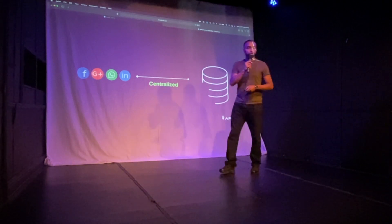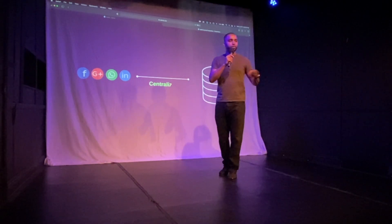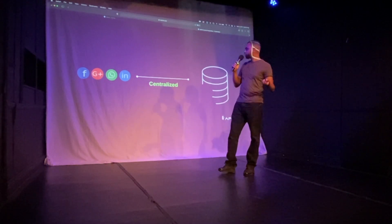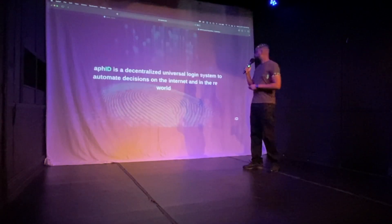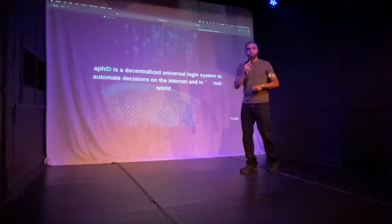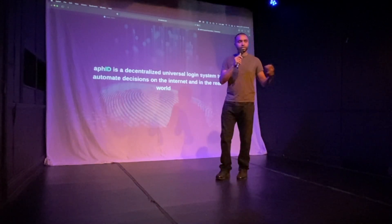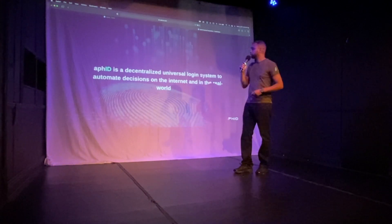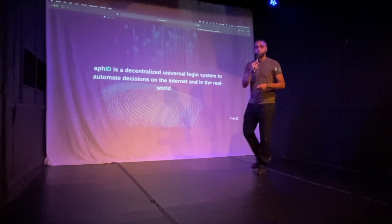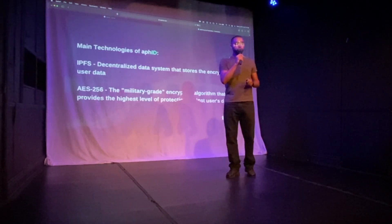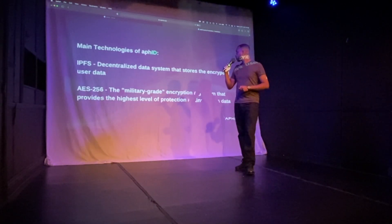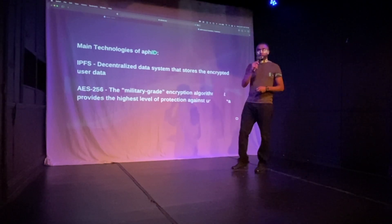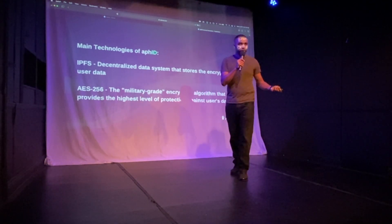But what if there were an alternative? What is the polar opposite of being centralized? If you're in web3, crypto, or blockchain, you've probably heard the word decentralized. AFID is a decentralized login system that's going to work universally to automate decisions on the internet and also in the real world. All of your information on AFID is stored on IPFS — the InterPlanetary File System.